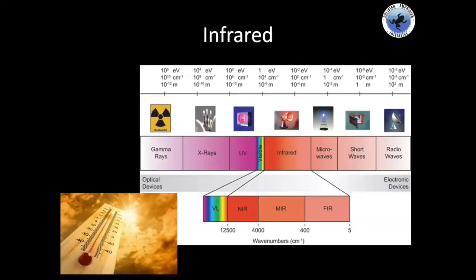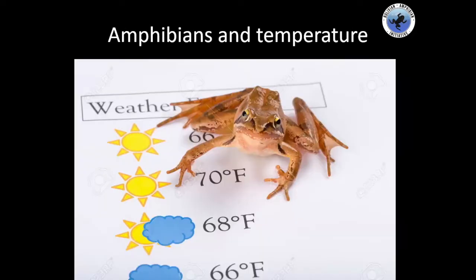We are going to first talk a little bit about infrared light, which is also going to affect the behavior and nutrition of amphibians. As we saw the other day, temperature is a factor that influences a lot of the digestion and assimilation of nutrients in amphibians. Amphibians, as you know, are very dependent on temperature — they are cold-blooded vertebrates.